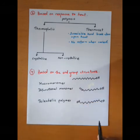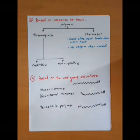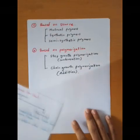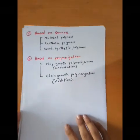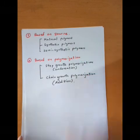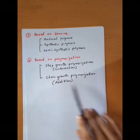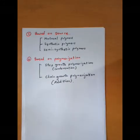These are the four main classifications we are interested in. Polymers can also be classified based on their source — natural, synthetic, and semi-synthetic polymers — and based on polymerization mechanism: step-growth polymerization (condensation) and chain-growth polymerization. That covers everything for this video. I hope to meet you again in another video. Until then, take care.